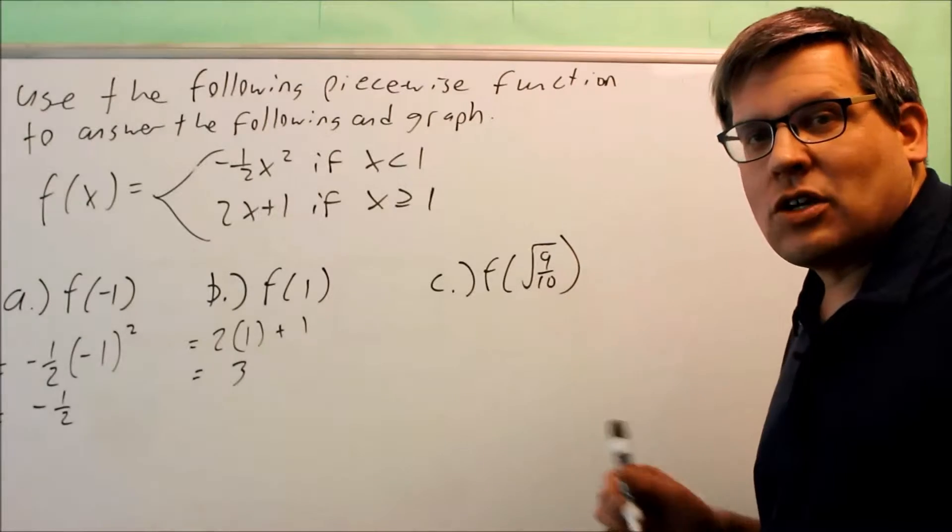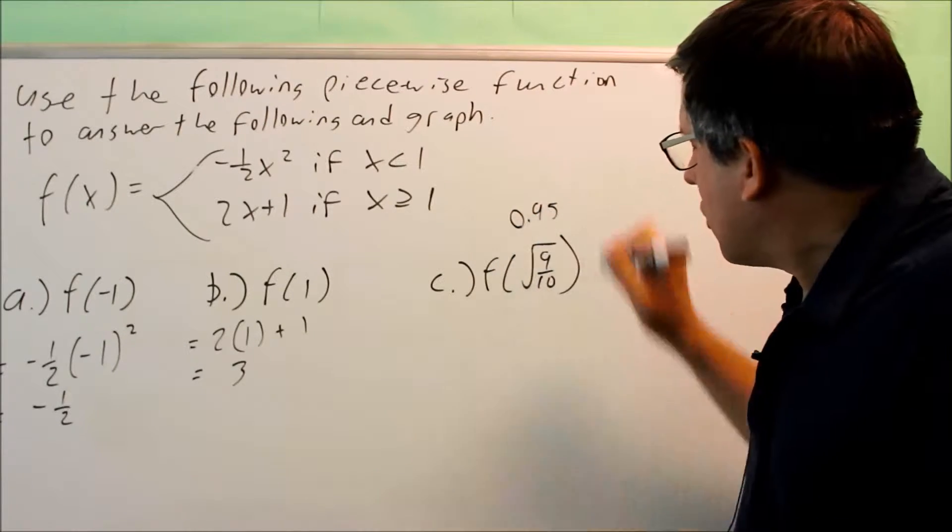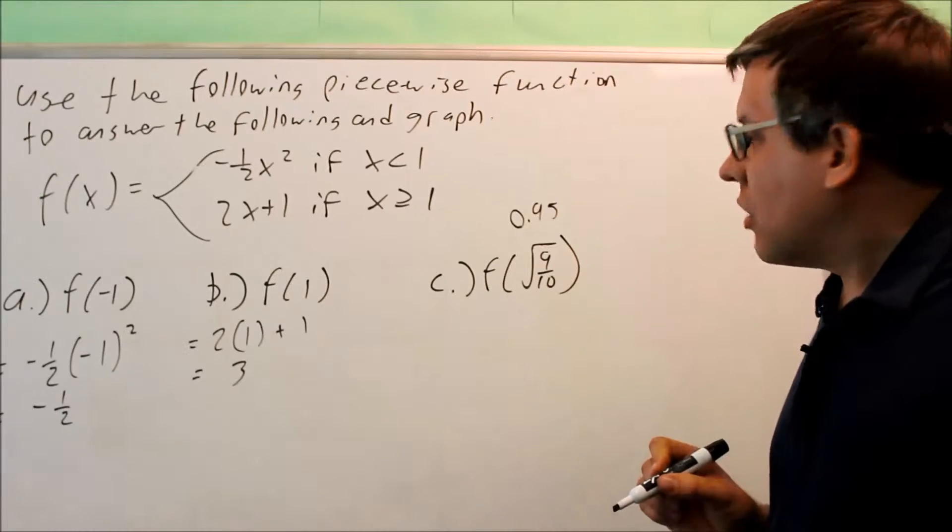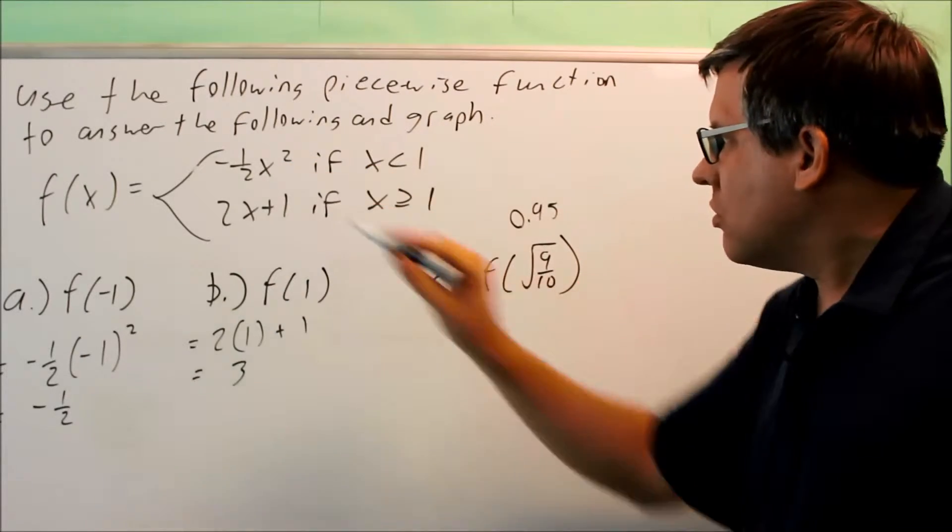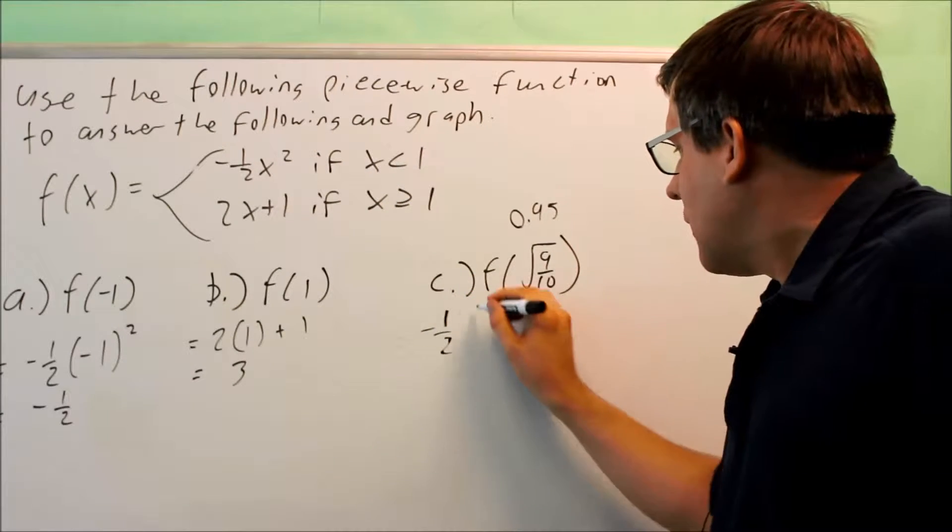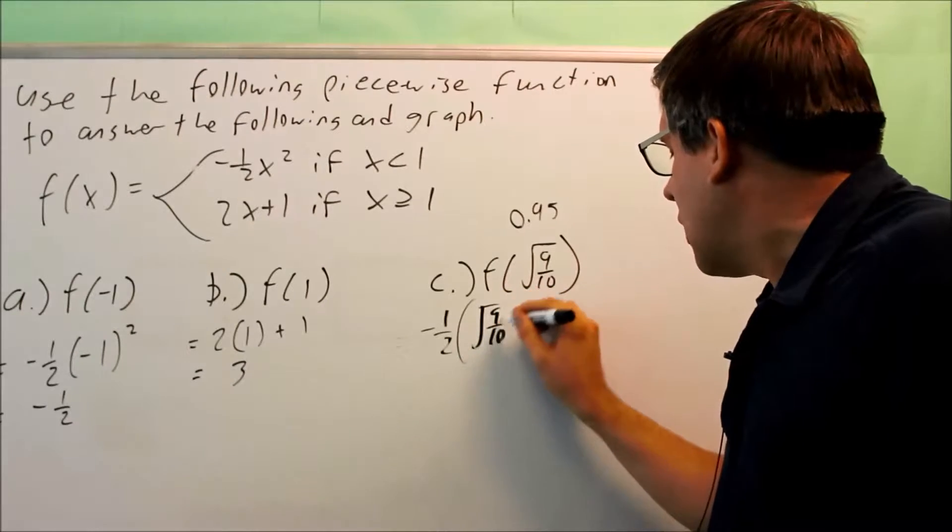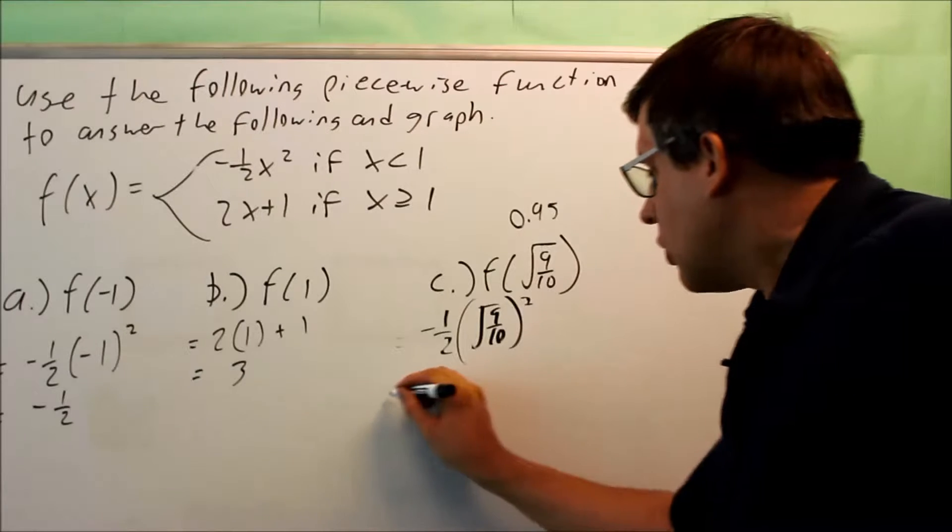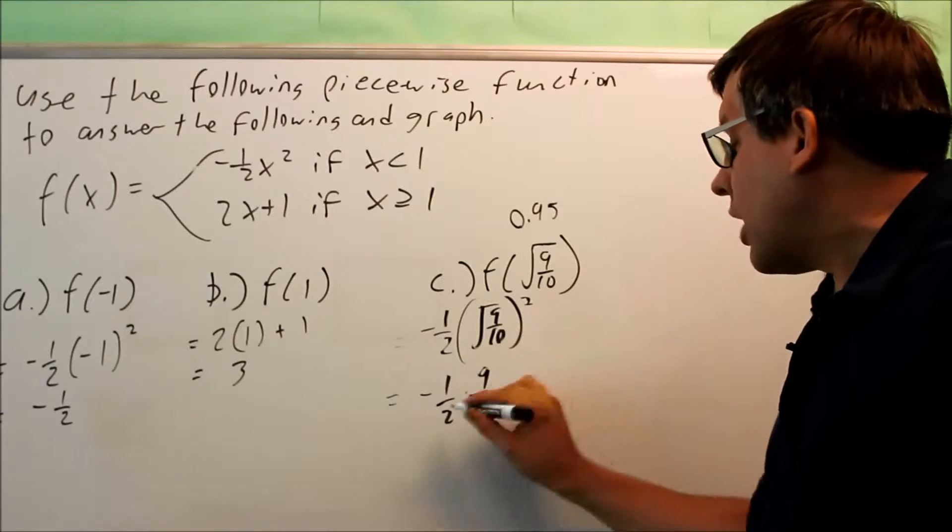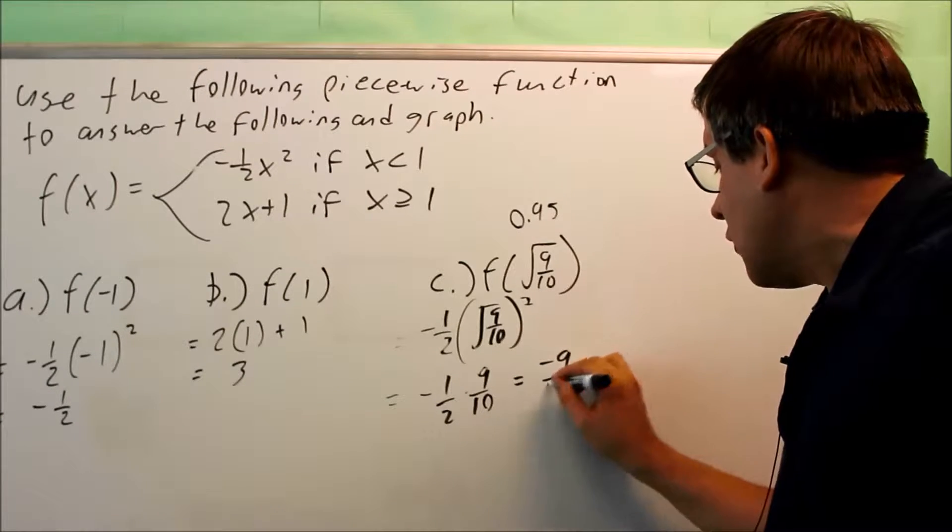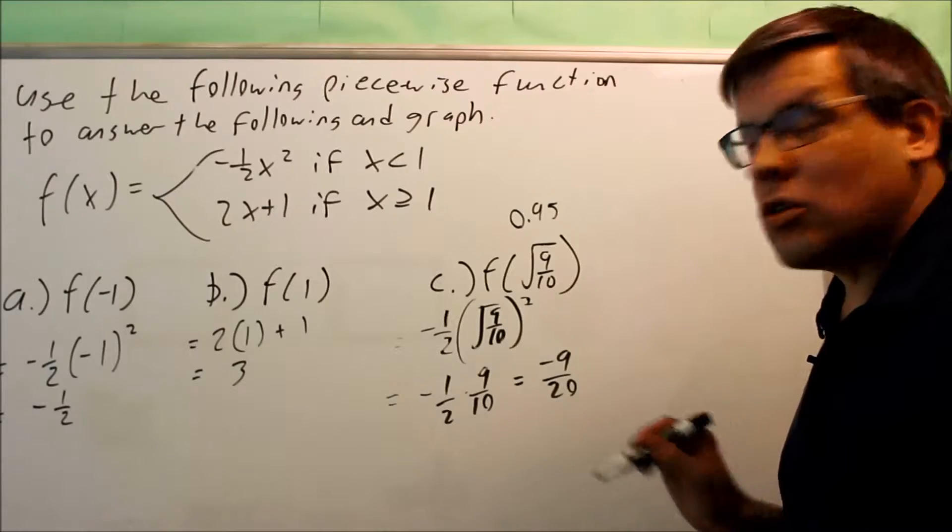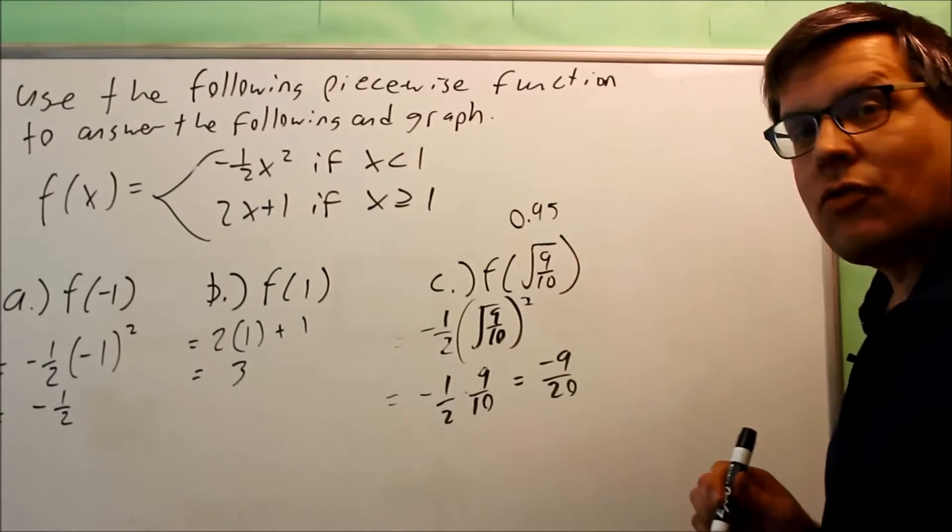Next, we're going to do the square root of 9 tenths. If you're not sure what this is, put it into your calculator, and you can find out that's 0.95. So 0.95 would be less than 1, so we have to put the square root of 9 tenths into the first equation. Negative 1 half times the square root of 9 tenths squared. The square is going to get rid of the radical, and you end up with negative 1 half times 9 tenths. That gives you negative 9 twentieths.